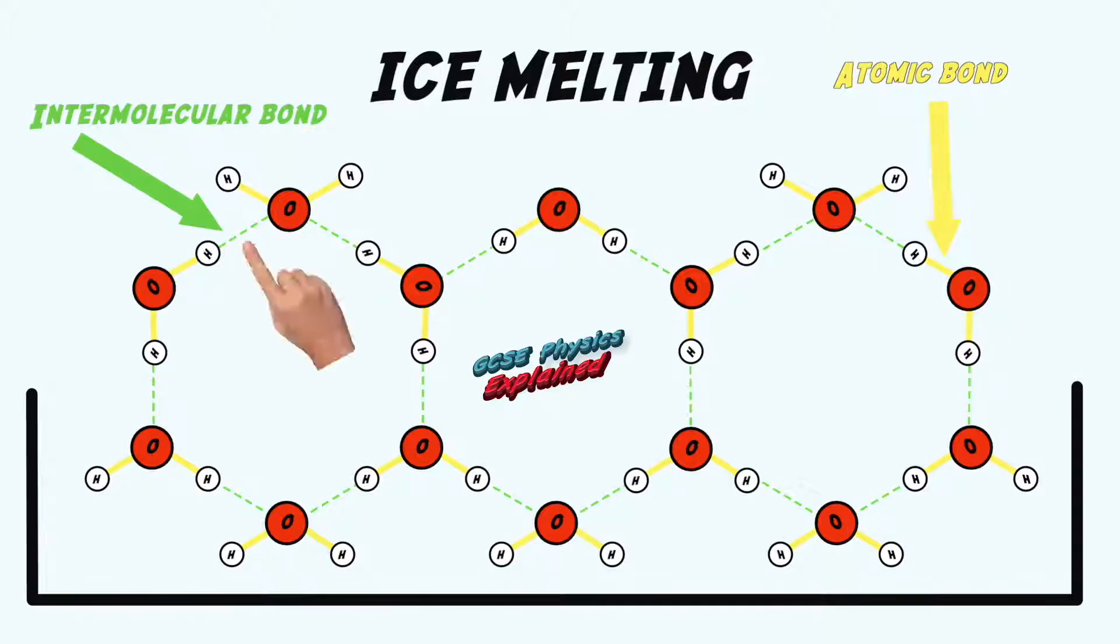Please note, intermolecular bonds join one molecule to a neighboring molecule. They are different to atomic bonds which join atoms together to make the molecule.